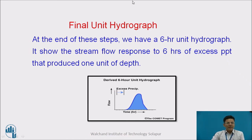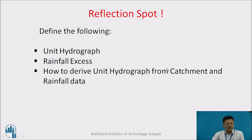So ultimately we arrive at the final unit hydrograph. At the end of these steps we have a 6-hour unit hydrograph, meaning these are the 6 hours over which we have excess precipitation. It shows the streamflow response to 6 hours of excess precipitation that produced 1 unit of depth. Reflection spot: define the unit hydrograph and the rainfall excess, and explain how to derive a unit hydrograph from catchment and rainfall data.